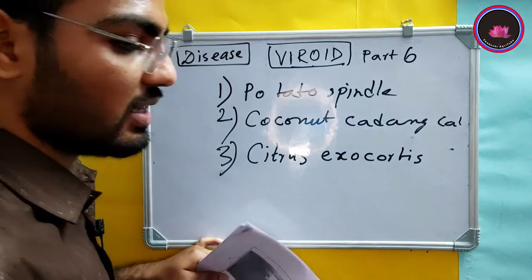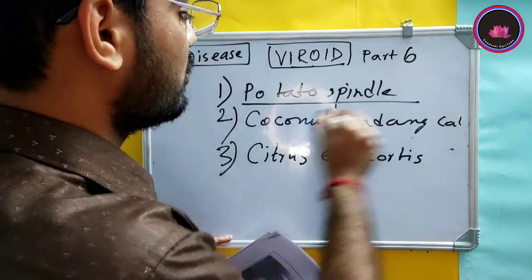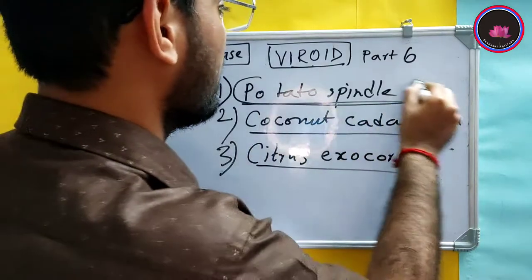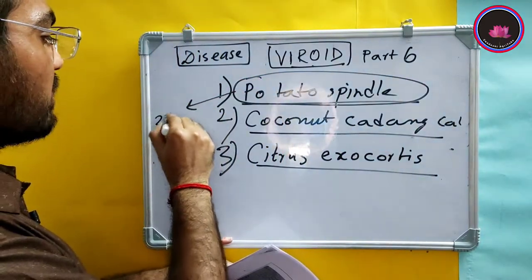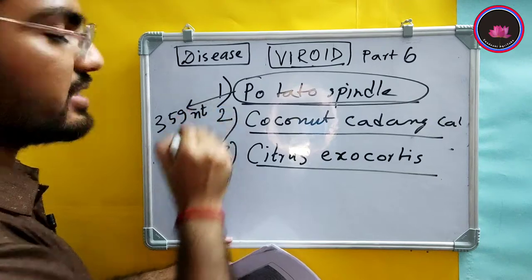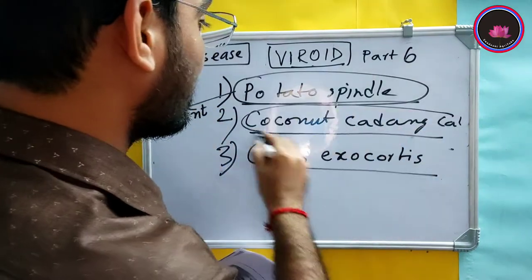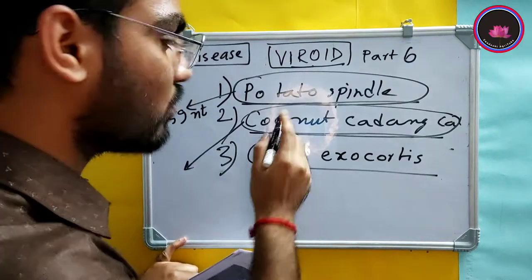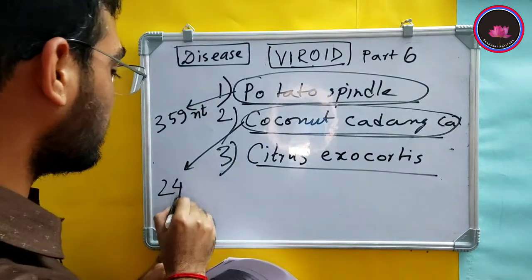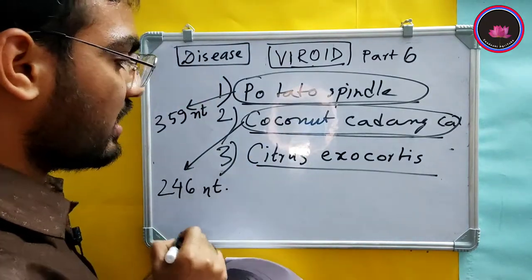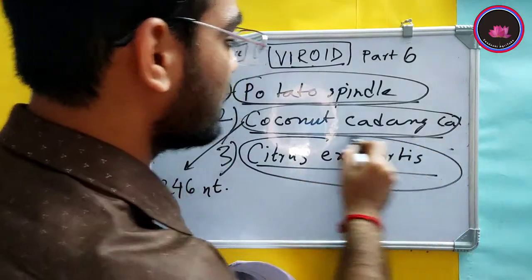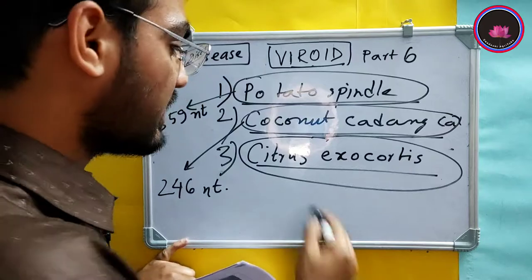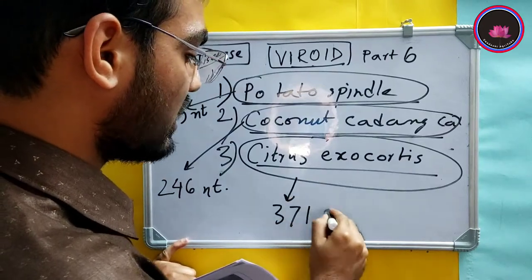You have to remember the genome size of these diseases. Potato spindle tuber viroid has a genome size of 359 nucleotides. Coconut cadang-cadang is the smallest viroid, having 246 nucleotides. Citrus exocortis has the largest genome size among viroids at 371 nucleotides.